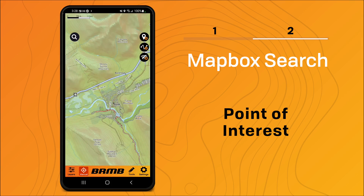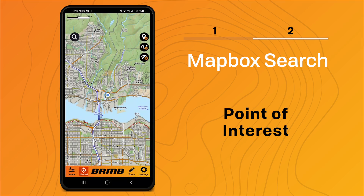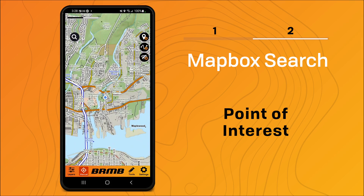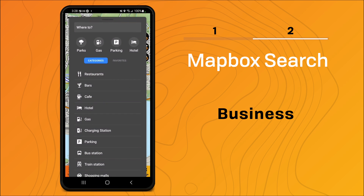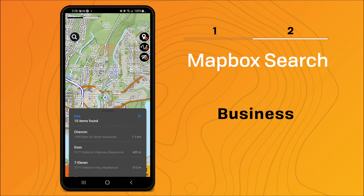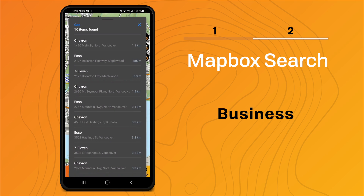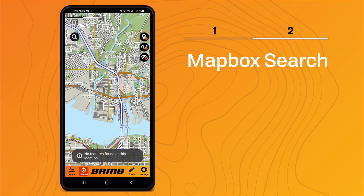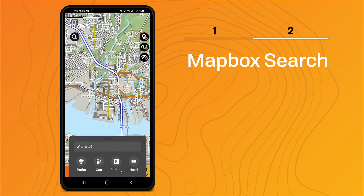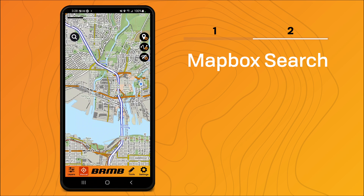If I go back to my local area, the Mapbox search also allows you to search for different businesses based on useful categories. If I were to click on gas, for example, it brings up a list of the closest gas stations near me. Selecting a name can bring up the location on the map. When you open the Mapbox search, if you need to close it, you can simply click the same button in the top left corner to close it again.